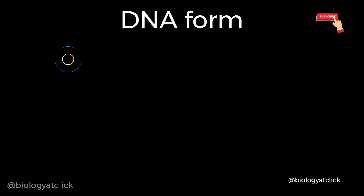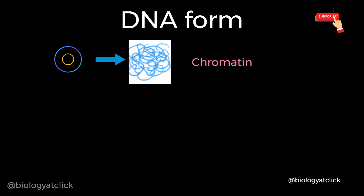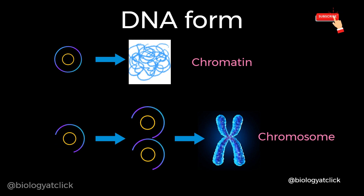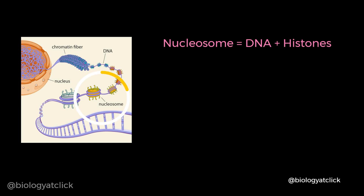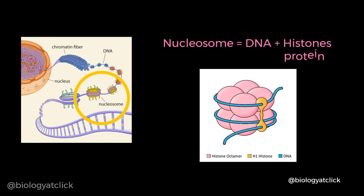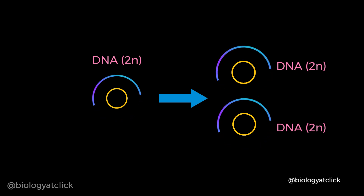Before moving on to G2 phase, it's worth understanding the form of DNA. When cells are not dividing, the DNA is spread in a thread-like structure called chromatins. Once the cell starts preparing for division, its DNA takes a condensed form called chromosomes. If we take a closer look at chromosomes, they are made up of pieces of DNA called genes. Each gene, if unwrapped, is composed of heterochromatin and euchromatin. Euchromatin is composed of repeating subunits known as nucleosomes. A single nucleosome consists of a DNA sequence wrapped around a core of histone proteins. So when one cell divides into two, this DNA is copied so each new cell gets an equal amount of DNA as the parent cell.